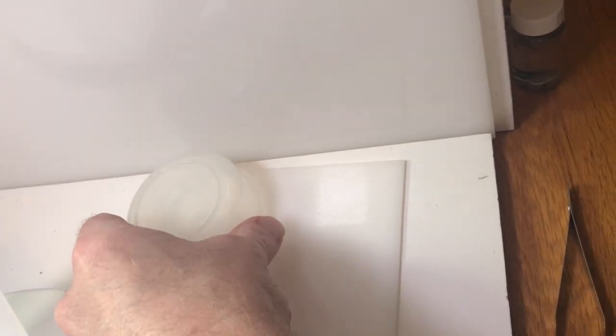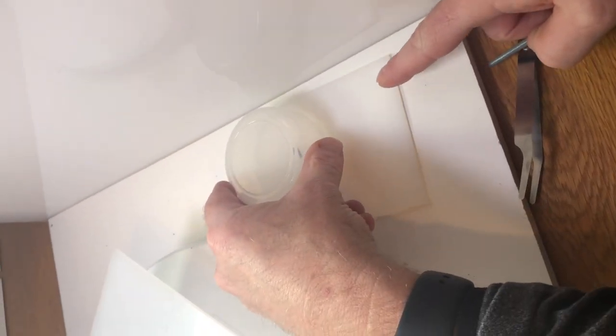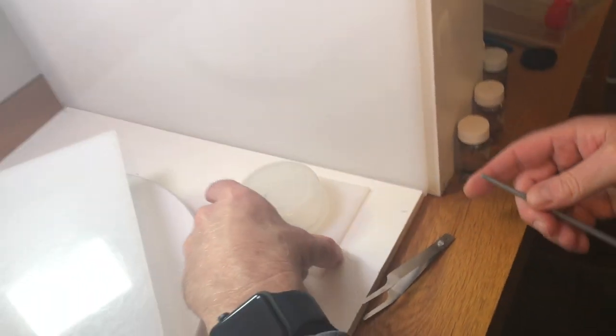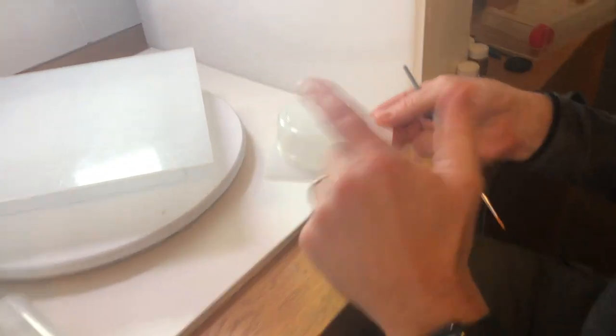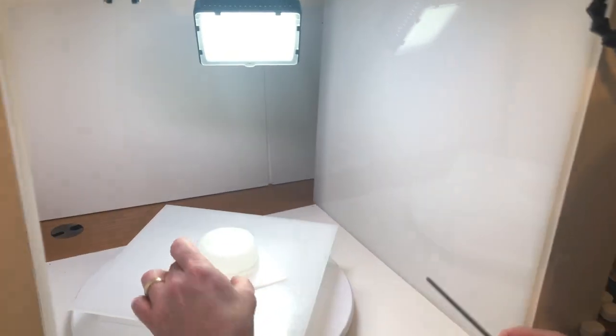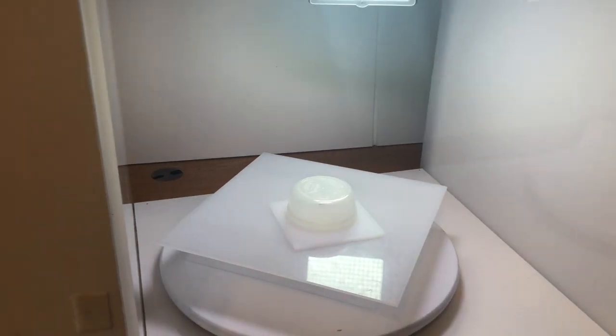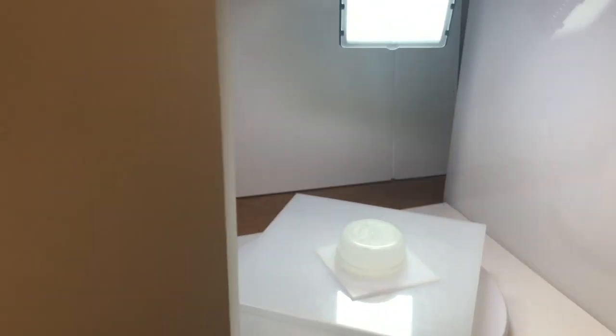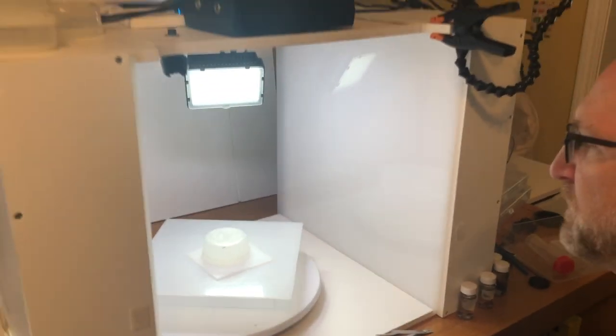So you get frosted plexiglass so light can go through the bottom, basically, for creating a nice white background on the bottom, which you can have a bit of a reflection on that some people like.